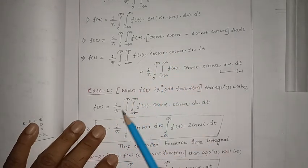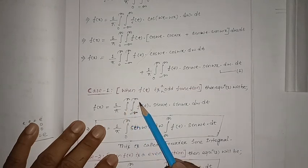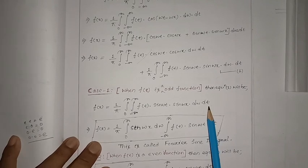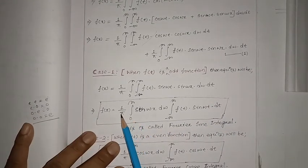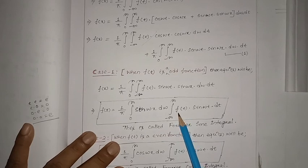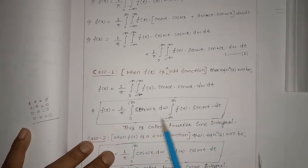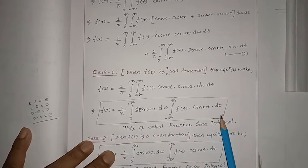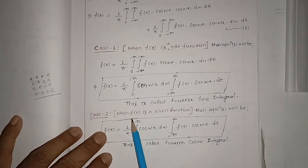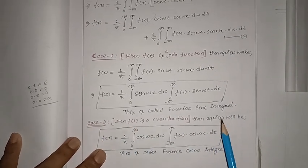When f(t) is an odd function, the first term of equation one cancels out, and we are left with f(x) = one by pi, integral zero to infinity, sin(ωx) dω, integral minus infinity to plus infinity f(t) sin(ωt) dt. This is nothing but called the Fourier sine integral.